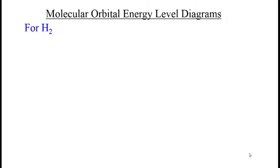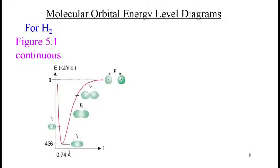A molecular orbital energy level diagram is, by definition, a quantized picture. For dihydrogen, we've seen an energy diagram in figure 5.1, but it was a continuous plot of energy on the y-axis versus distance between the nuclei on the x-axis.